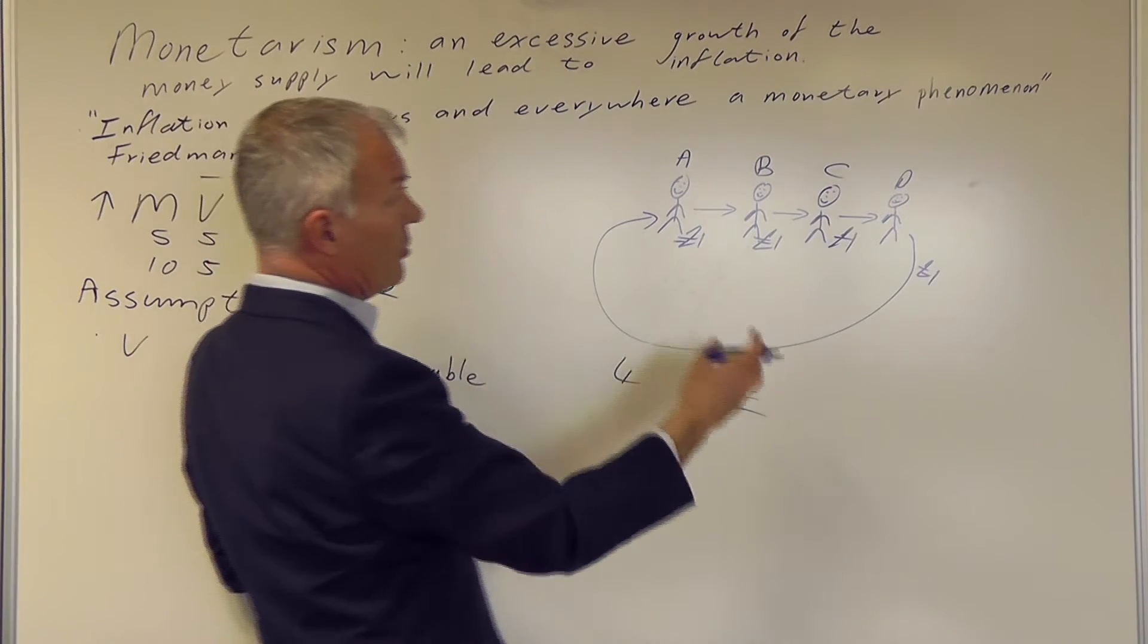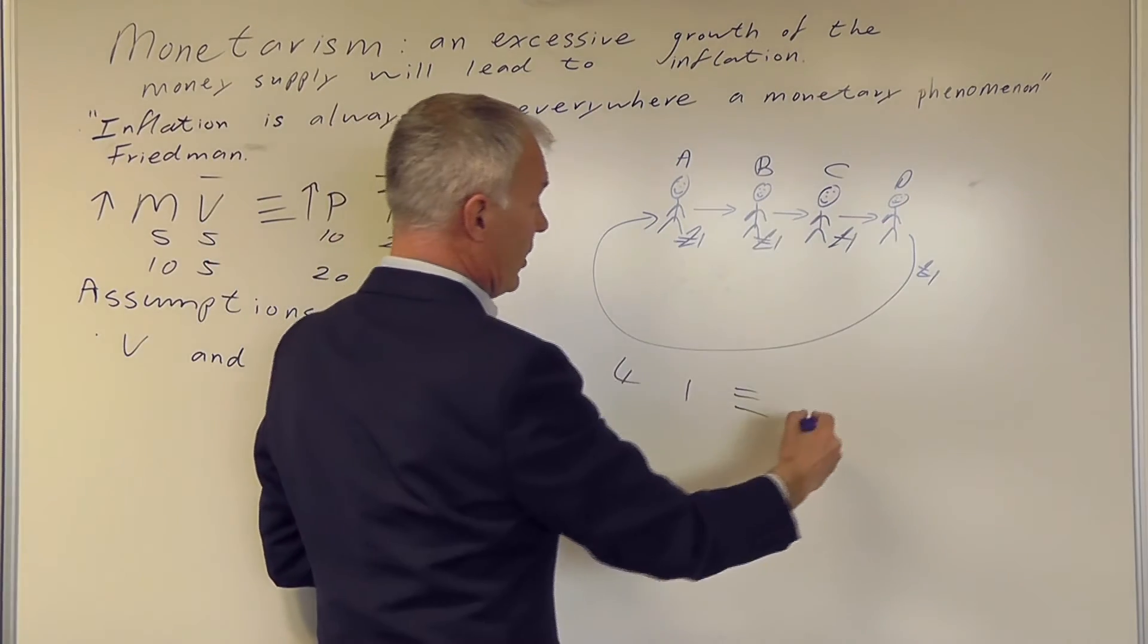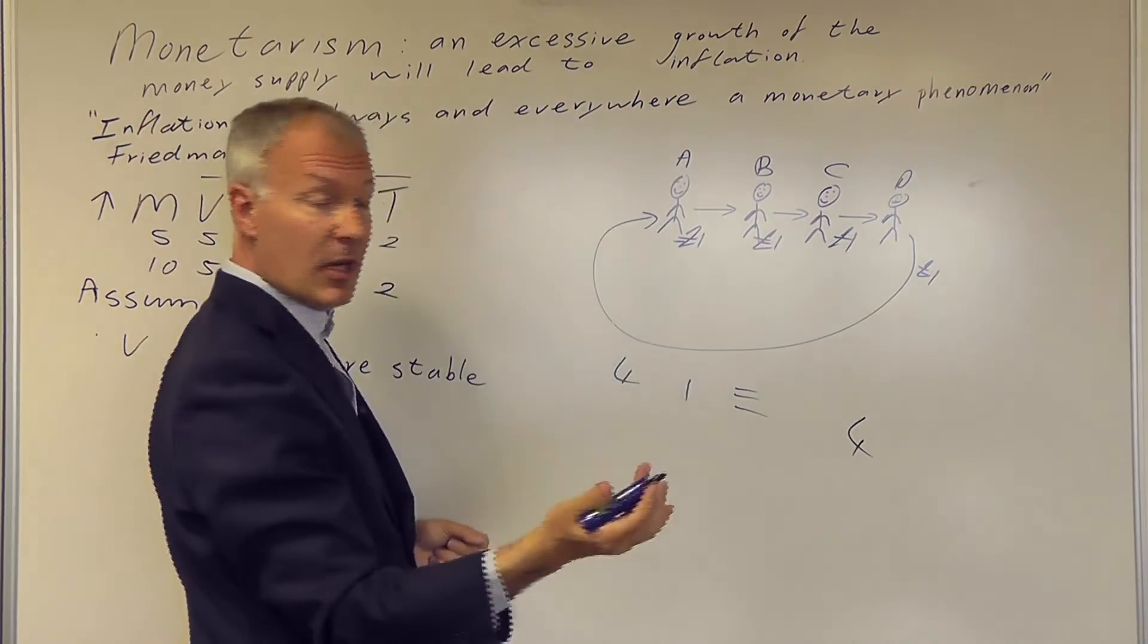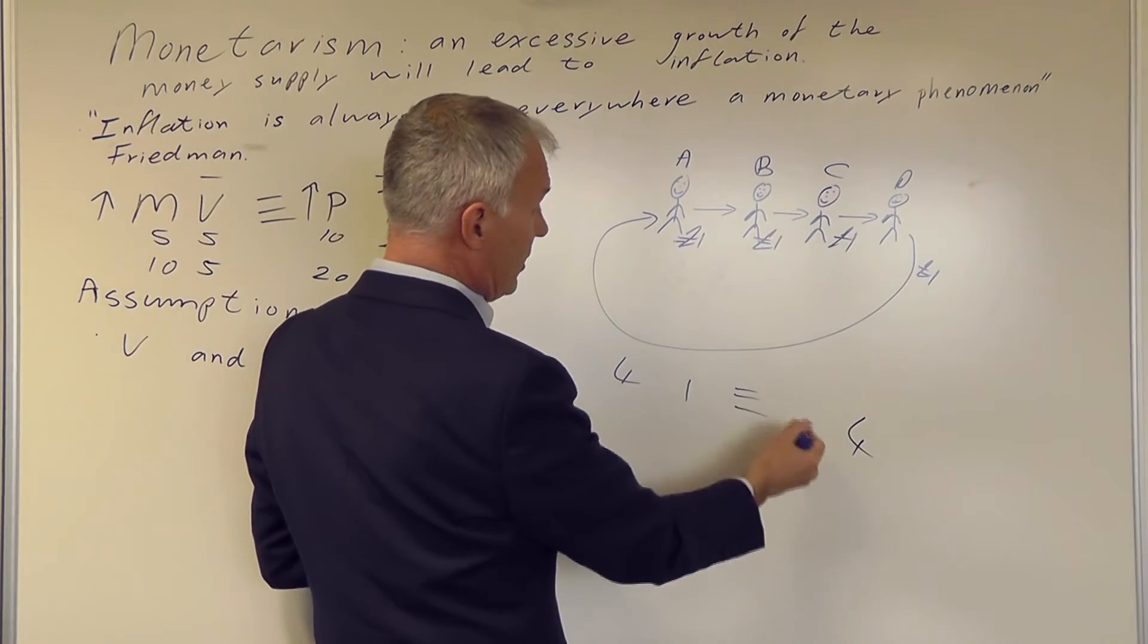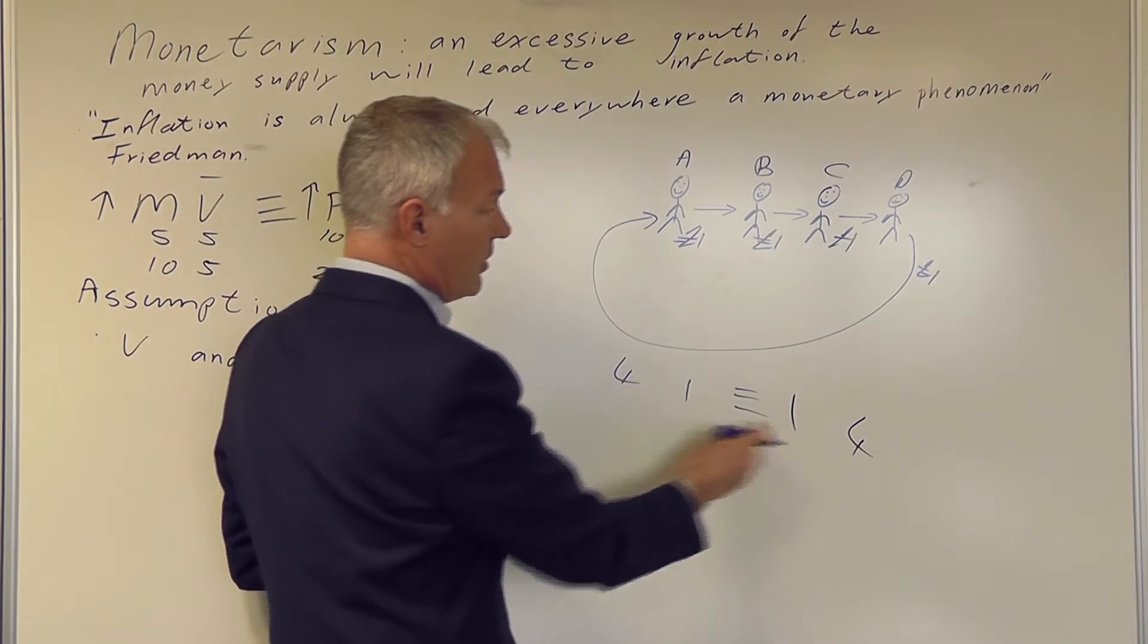And the level of transactions, there's been four transactions in the economy. And, therefore, the price level is 1. So 1 times 4 equals 1 times 4.